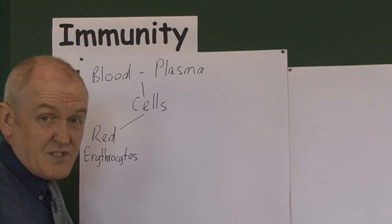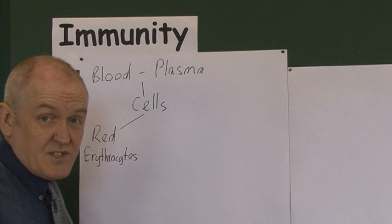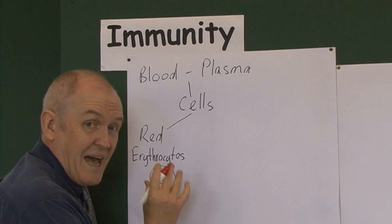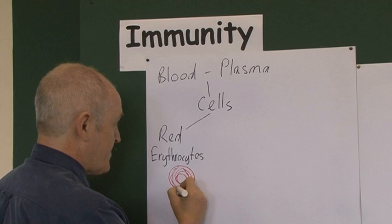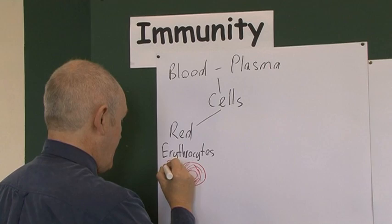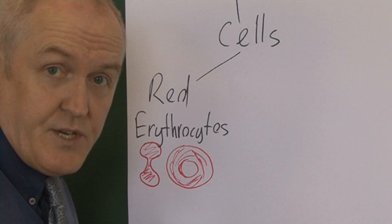The red cells are the erythrocytes — 'erythro' actually means red. These are well-known cells in anatomy and physiology. They're biconcave discs with an area of central pallor which is a third or less of the diameter of the whole cell. These red cells are transporting oxygen around the body.